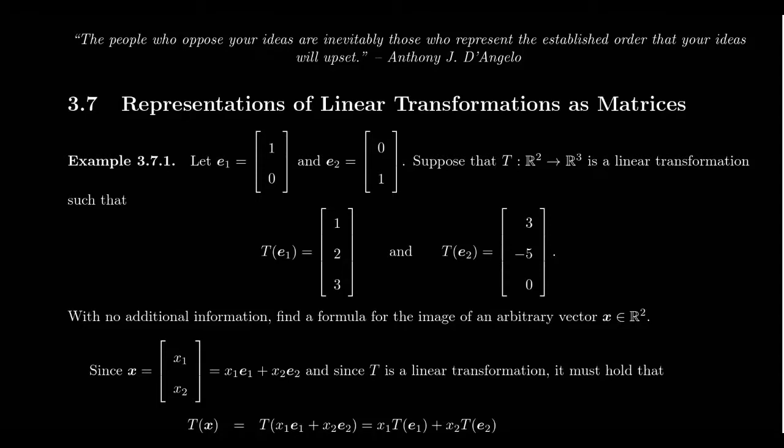Hence, all geometric transformations in the previous lecture were linear transformations. In section 3.7, we will now take a look at the fact that all linear transformations are essentially just matrix multiplication. In fact, the way we define matrix multiplication at the beginning of this chapter had the sole purpose that we wanted matrix multiplication to coincide with linear transformations. In other words, matrices are just linear transformations in coordinates.